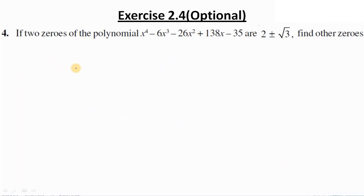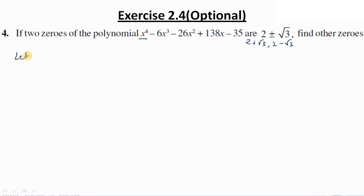Question 4: if the zeros of the polynomial x⁴ - 6x³ - 26x² + 138x - 35 are 2 ± √3, find the other zeros. Since this is a bi-quadratic (degree 4) polynomial, it has 4 zeros. Two are given: 2+√3 and 2-√3. We need to find the remaining two. Let p(x) = x⁴ - 6x³ - 26x² + 138x - 35.